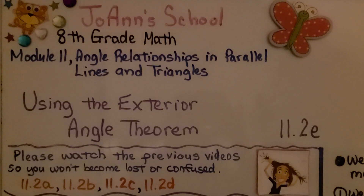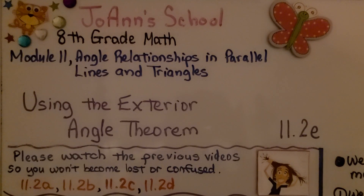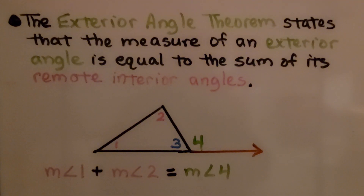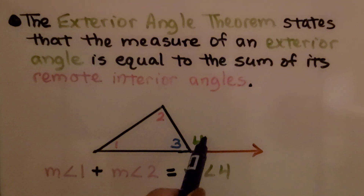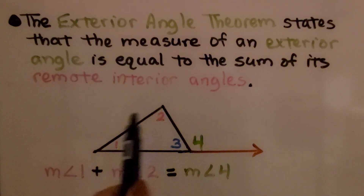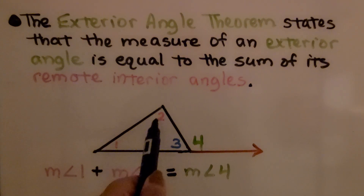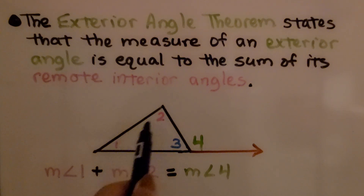Using the exterior angle theorem, lesson 11.2e. The exterior angle theorem states that the measure of an exterior angle is equal to the sum of its remote interior angles.